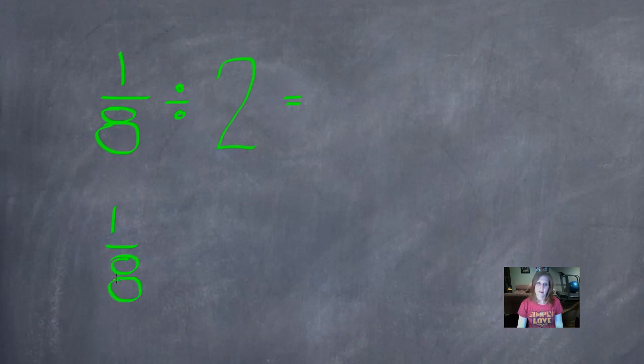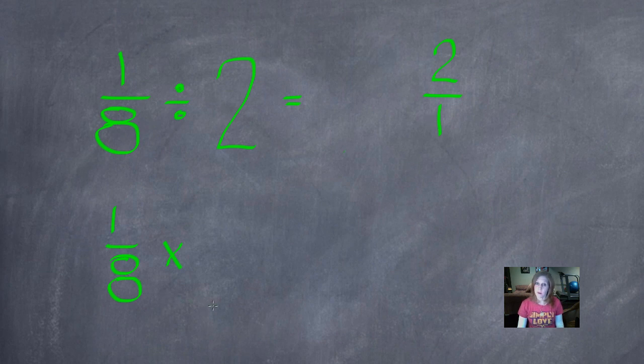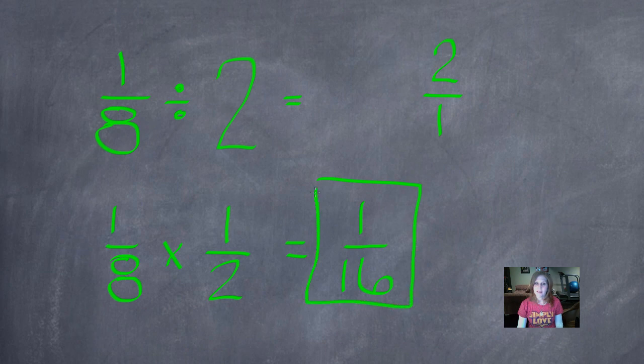Let's work that one. So 1 eighth times, using the opposite operation - the whole number 2 is represented by 2 over 1, so the reciprocal of that is 1 over 2. 1 times 1 is 1, 8 times 2 is 16. 1 sixteenth.